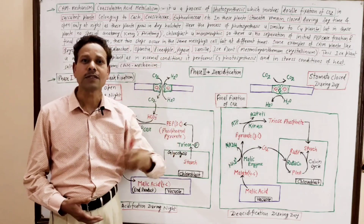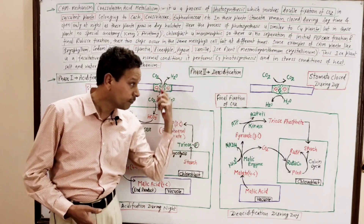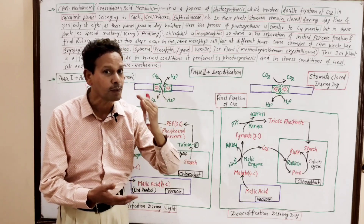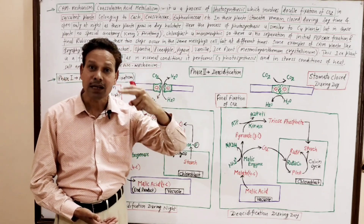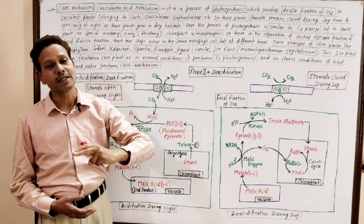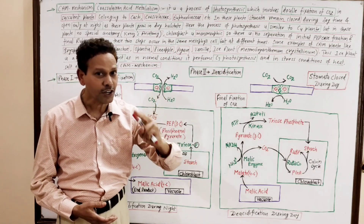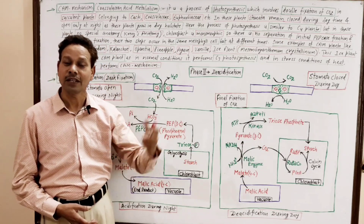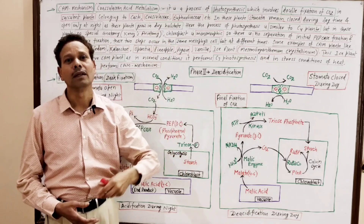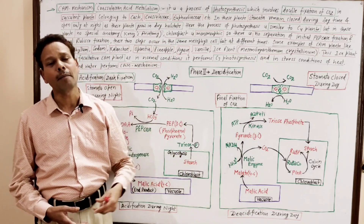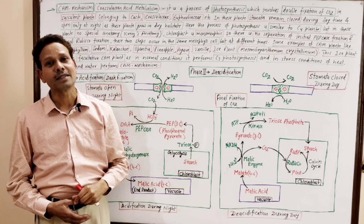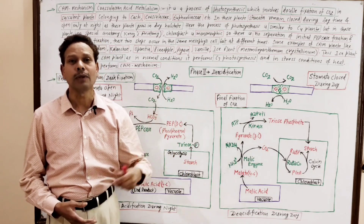CAM is a process of photosynthesis in which double fixation of CO2 occurs, just like in C4 plants. In CAM plants, double fixation of CO2 takes place. These are succulent plants which grow in xeric conditions and dry habitats, belonging to the family Cactaceae, Euphorbiaceae, and Crassulaceae.